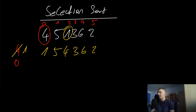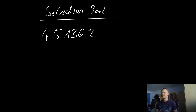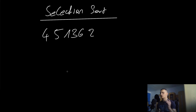We swap one into the first position, giving us one, five, four, three, six, two. Then we continue with the rest of the list and repeat the same process. It's like a reverse bubble sort — after each iteration you have one fewer element to care about, but instead of the maximum it's the minimum that gets placed correctly.